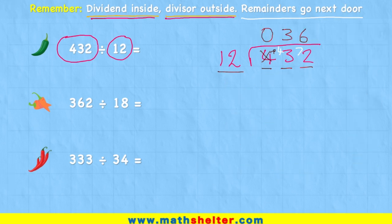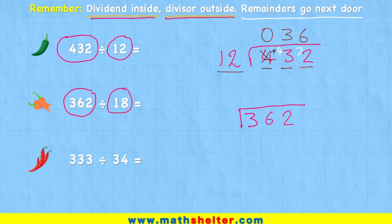Okay, let's look at a second example. And again, we're going to put our dividend inside the bus stop. So 362 goes inside the bus stop, and 18 outside. Same thing again, it's going to be very helpful for me to get a list of the 18 times tables.